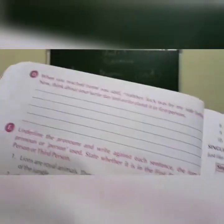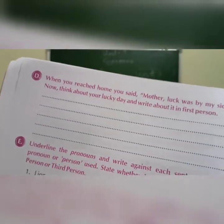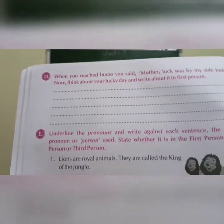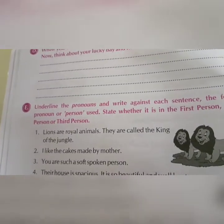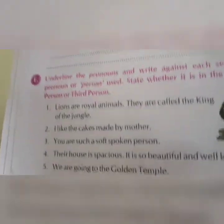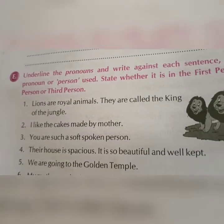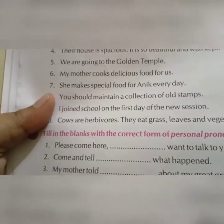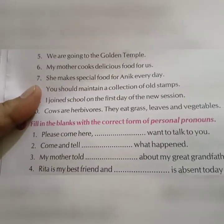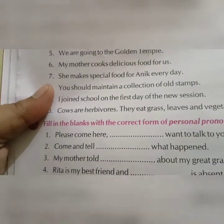In exercise D, think about your lucky day and write about it in first person — it is your choice what you want to write. Then underline the pronouns and write against each sentence the form of pronoun used — state whether it is first person, second person, or third person. Also fill in the blanks with the correct form of personal pronoun. For example: 'Please come here. Dash want to talk to you' — the answer is 'I want to talk to you.'